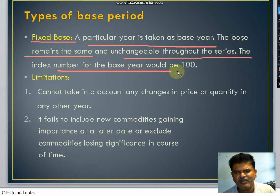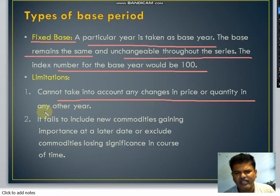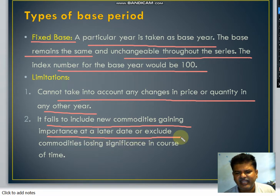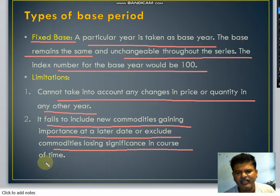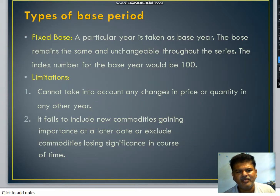What are the limitations of the fixed base? First, it cannot take into account any changes in price or quantity in any other year. Second, it fails to include new commodities gaining importance at a later date, or exclude commodities losing significance over time. Keeping these two limitations in mind, we now understand what is meant by the chain base year.